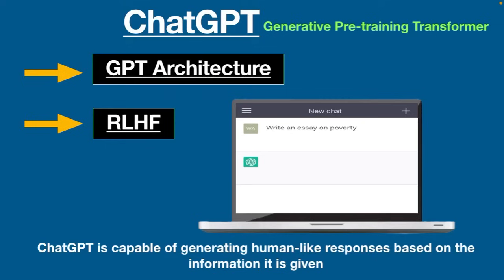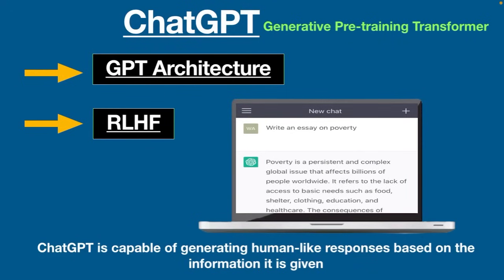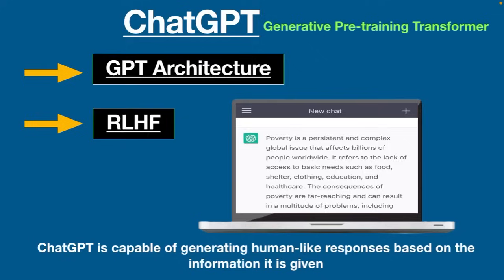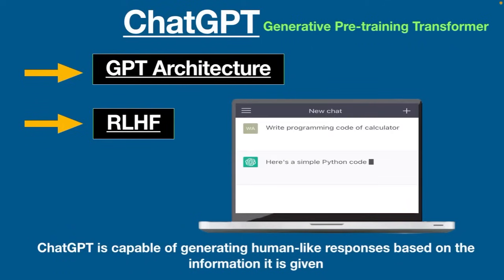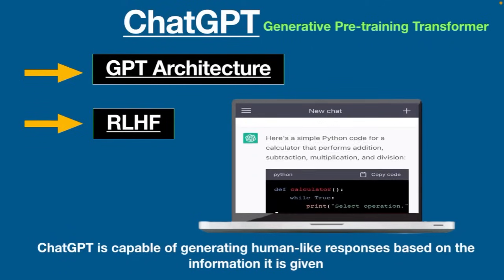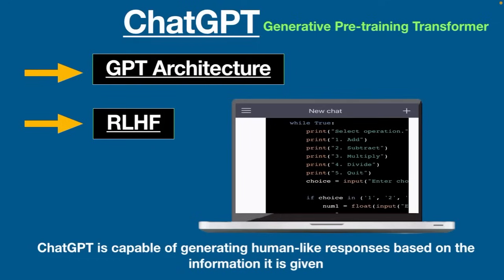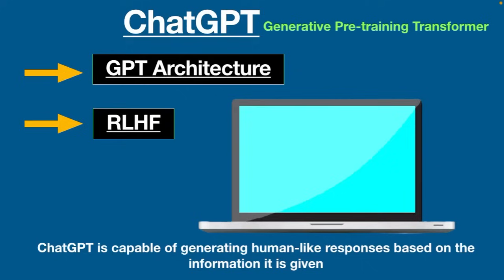For example, we ask this tool to write an essay — as you can see it starts writing, and you can also mention the word limit. We can also ask it to write programming code, like a calculator, and it starts writing that too. It can even fix bugs found in coding. This is absolutely incredible. People are using this tool for many purposes such as writing emails, poetry, helping with homework, and study.